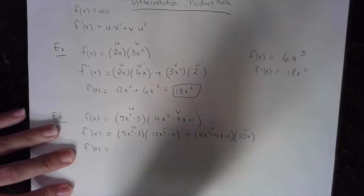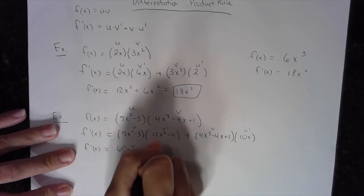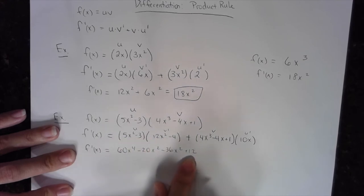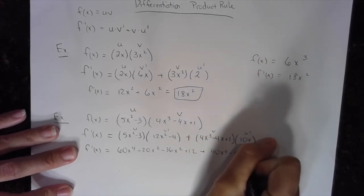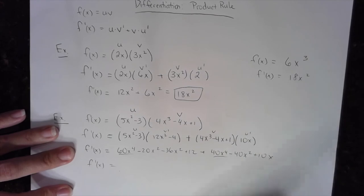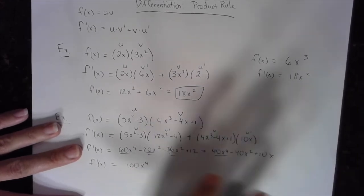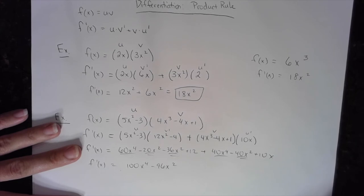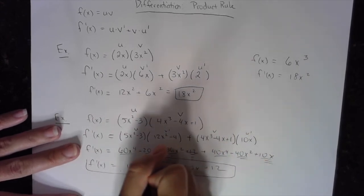Now to simplify, we multiply out and combine like terms. From the first product: 5x squared times 12x squared is 60x to the fourth, 5x squared times negative 4 is negative 20x squared, negative 3 times 12x squared is negative 36x squared, and negative 3 times negative 4 is plus 12. From the second product: 10x distributes to give 40x to the fourth, minus 40x squared, plus 10x. Combining: 100x to the fourth, negative 96x squared, plus 10x, plus 12.